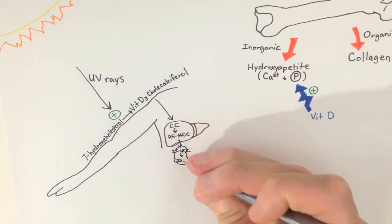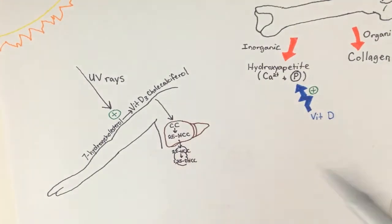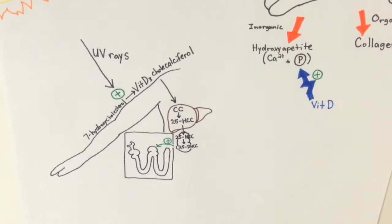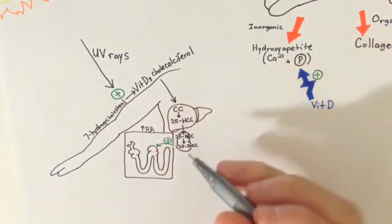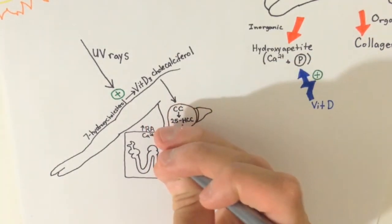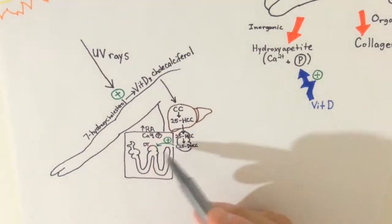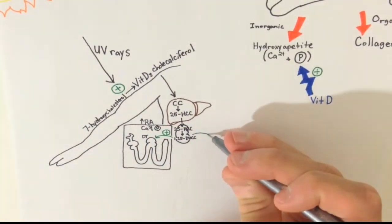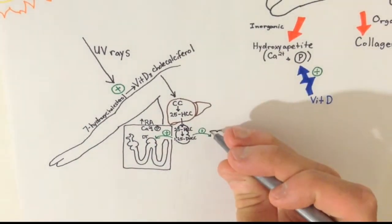1,25-DHCC has three main ways to increase calcium and phosphate levels. Let's start with the kidney itself. 1,25-DHCC stimulates renal absorption of calcium and phosphate at the distal convoluted tubule of the nephron.